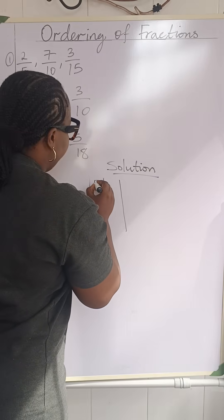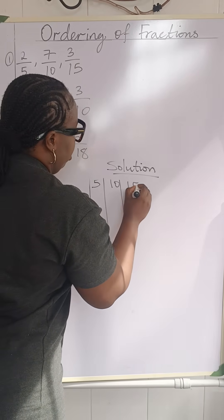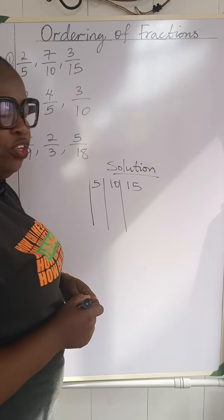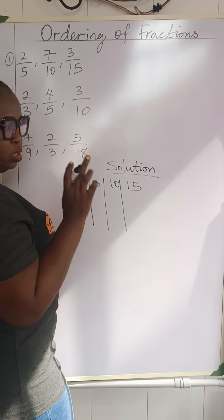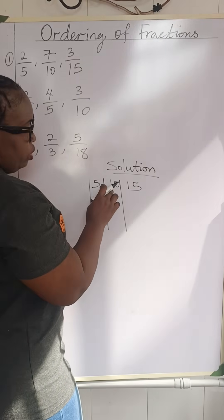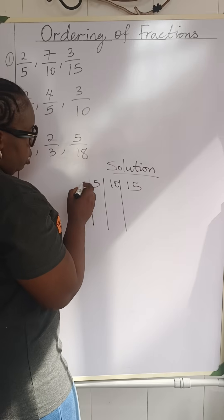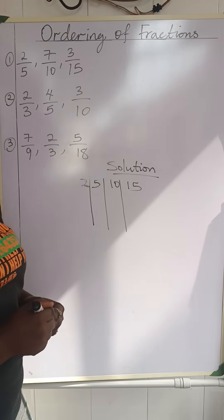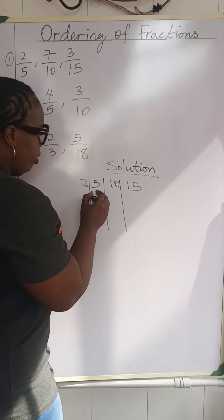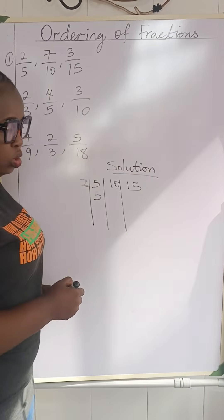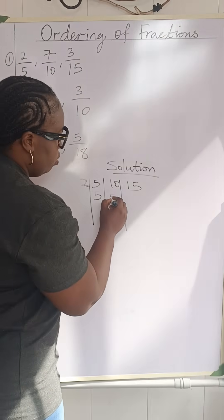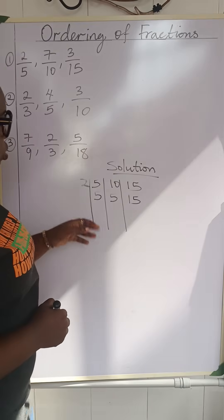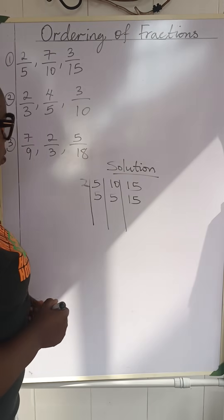We have 5, 10, and 15. We're going to use 2 as our first divisor — the smallest prime — because there is a 10 here. Two going into 5 cannot go, so we bring it down. Two going into 10 gives 5. Fifteen cannot be divided by 2 either, so we bring it down as well.